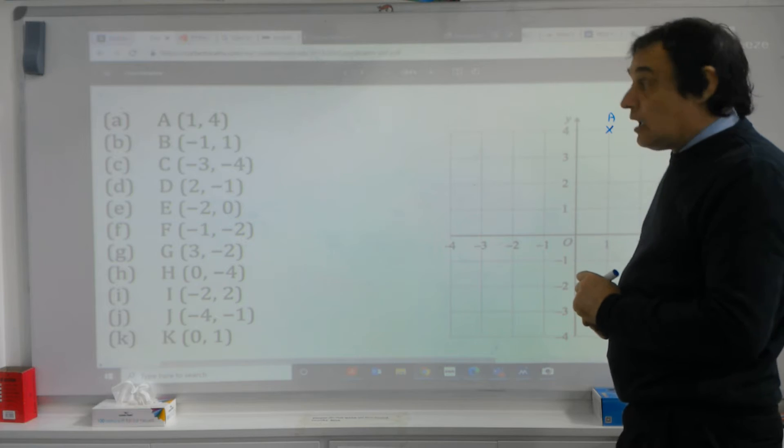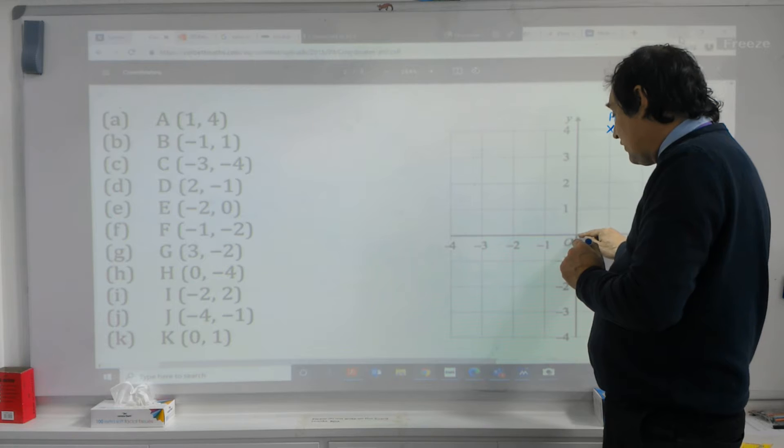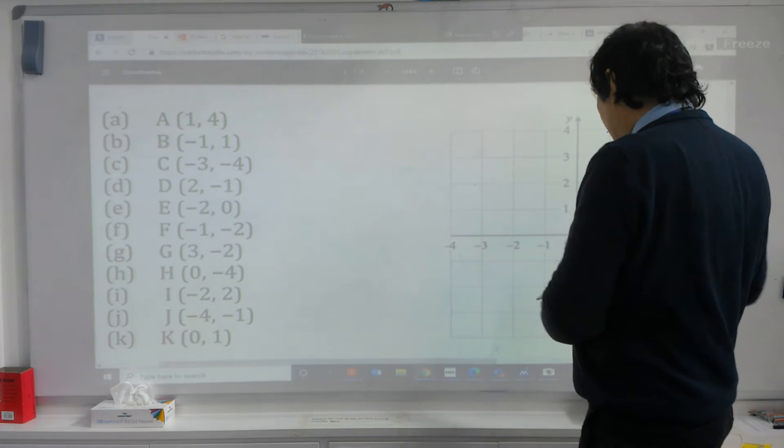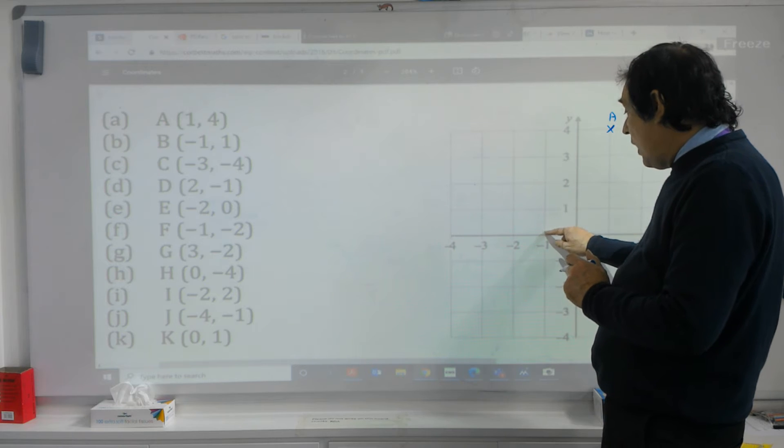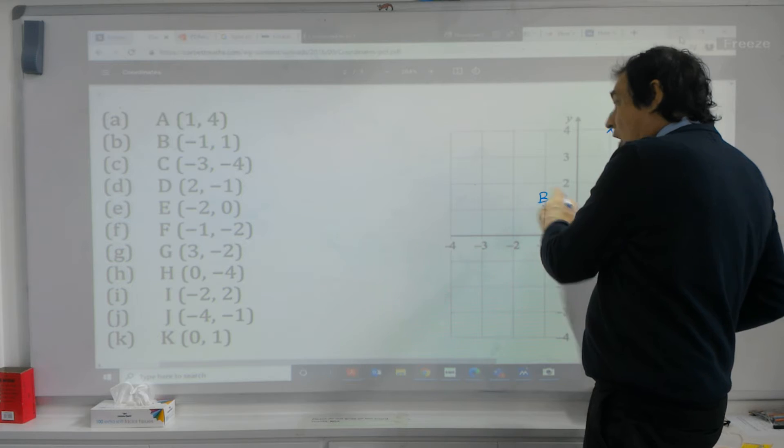B, we've got to go minus one and then one. So that means we go minus one on our along one. So minus one, that's over this way, that's to your left as you're looking at it. And then the one up, the second one, that's our up one, and we'll mark it with a B.